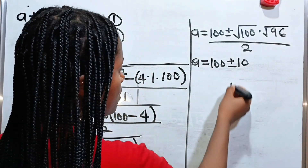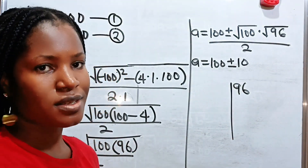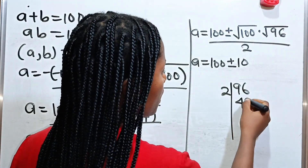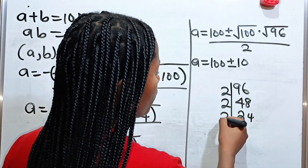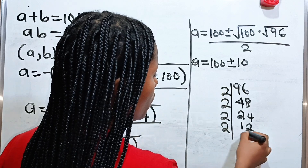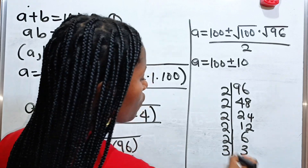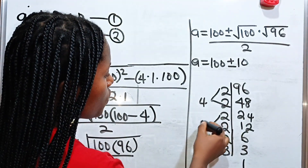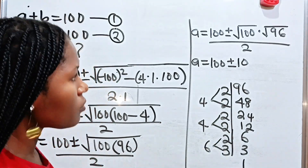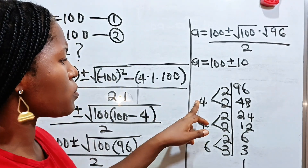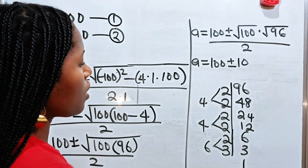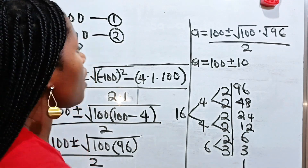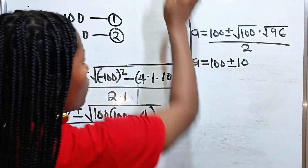Now let us simplify square root of 96. We divide with the smallest number possible, which is 2. So 2 divides 96 to give 48; 2 divides 48 to give 24; 2 divides 24 to give 12; divided by 2 gives 6; divided by 2 gives 3; divided by 3 gives 1. Now, since this is a square root, we group in 2s: 2 times 2 gives 4, 2 times 2 gives 4, and we have 2 times 3 is 6. We need a perfect square, so we multiply the two 4s to get 16. That means 96 equals 16 times 6. So this is how I simplify square roots, no matter how big they are.